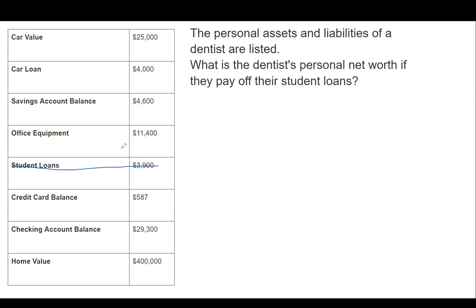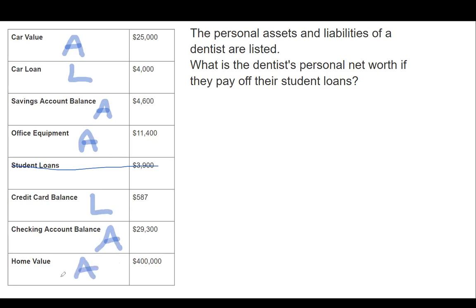A car value is what it's worth — that's an asset. A loan is a liability. A savings account balance is an asset. Office equipment is an asset. A credit card balance is a liability. A checking account balance is an asset, and your home value is an asset. If there was a home mortgage or a home loan, that would be a liability.